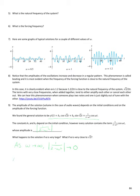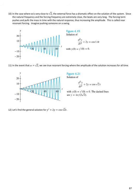If ω is very close to √2 — as ω approaches √2 — √2 squared is 2, and the denominator of that fraction gets really, really close to 0. One divided by something really tiny goes to infinity. So ω = √2 is a very special case. In that case, the external force has a dramatic effect on the solution because it causes the amplitude to approach infinity.